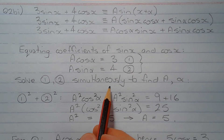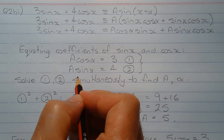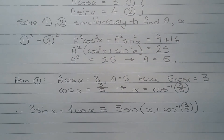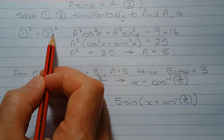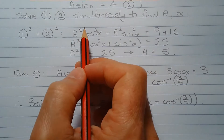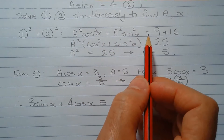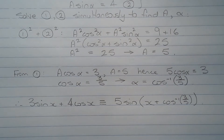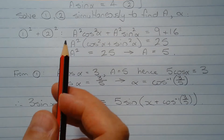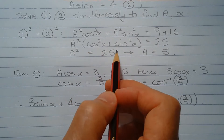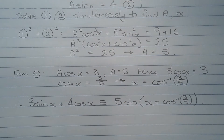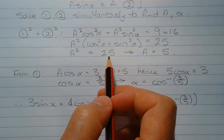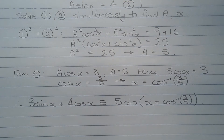Next we solve equations 1 and 2 simultaneously to find the values of A and α. Squaring equation 1 and equation 2 and adding them together gives A² cos² α + A² sin² α = 9 + 16. Factorizing out A² on the left hand side gives A² multiplied by (cos² α + sin² α) = 25. Since cos² α + sin² α = 1 by the Pythagorean identity, we have A² = 25, and taking the positive square root gives A = 5.